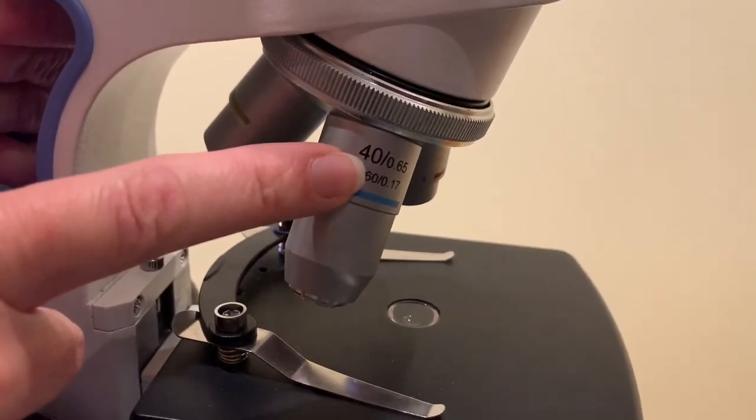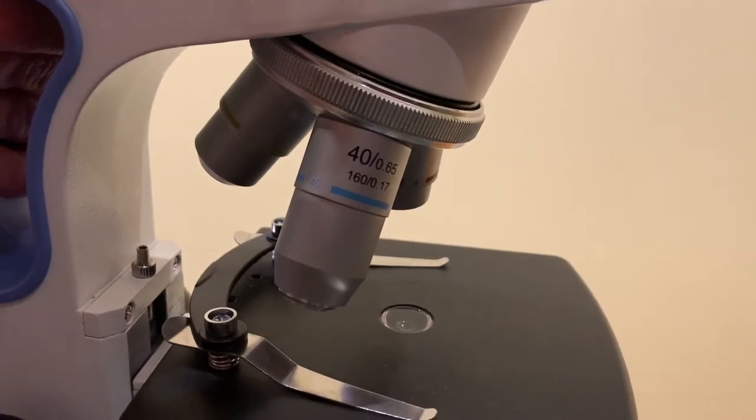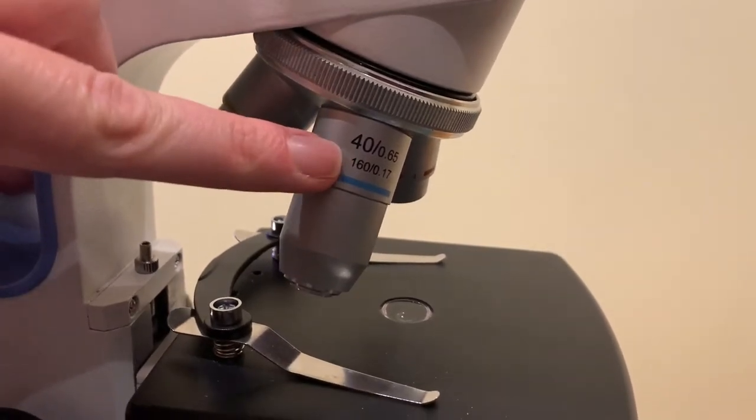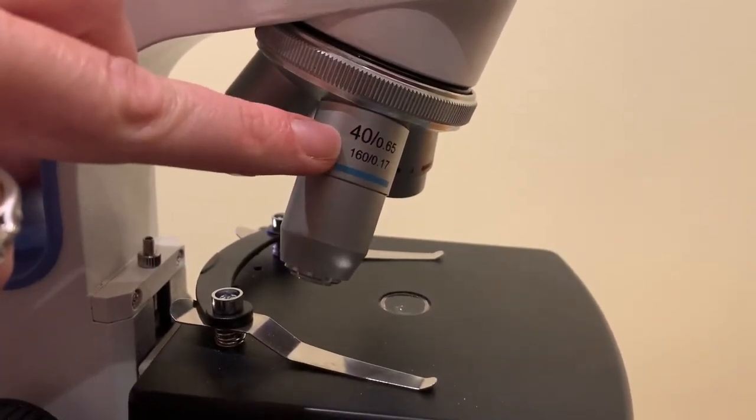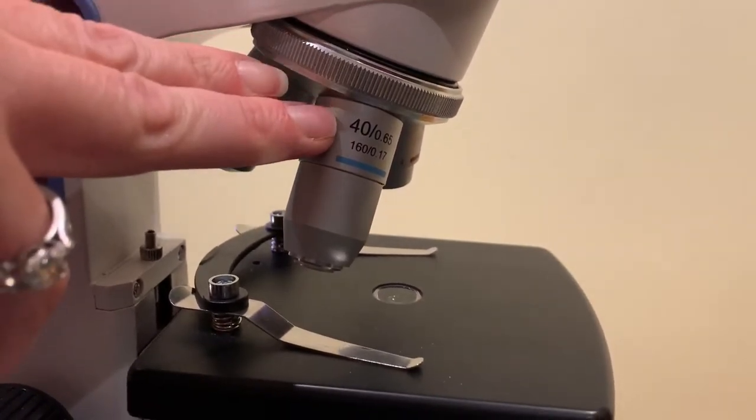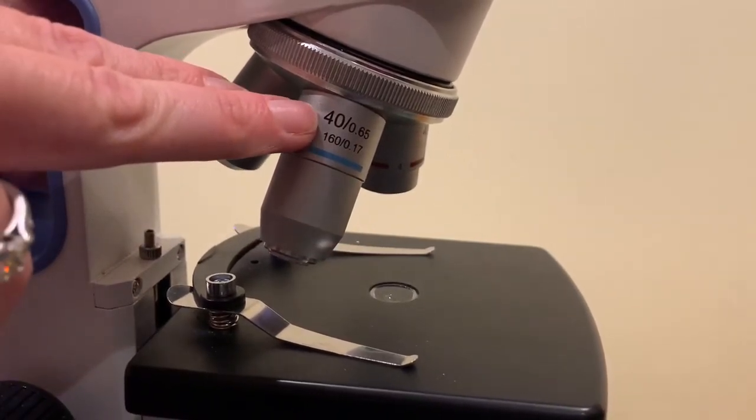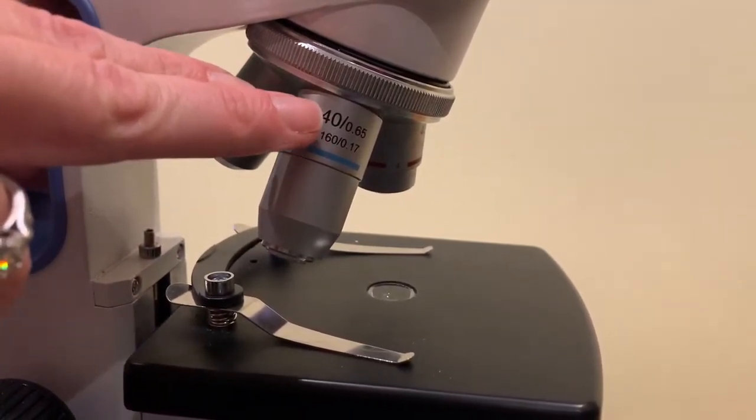Combining this with the 10x of the ocular lens we would do 10 times 40 is 400. So when you're using this microscope and you are using this objective lens to look at your sample, your sample will look 400 times larger than it does with the naked eye.